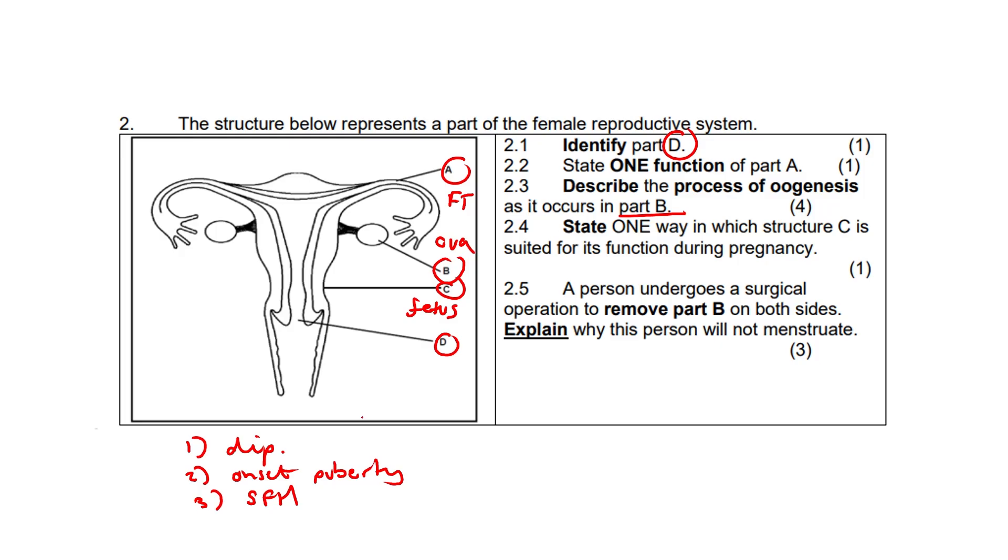2.4: State one way in which structure C is suited for its function during pregnancy. Well, main one here - muscular. It can enlarge to house and protect the developing fetus, and contractions during childbirth.